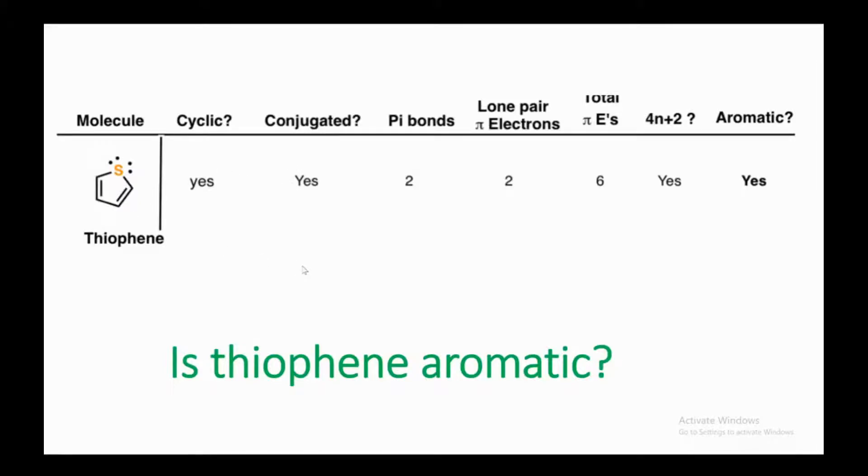Two pi bonds give four pi electrons, plus two lone pair pi electrons equals six total. If you put n equals one in Hückel's rule, the answer is six, which matches. Hence, this compound is aromatic because it's cyclic, conjugated, has six pi electrons, and obeys Hückel's rule.